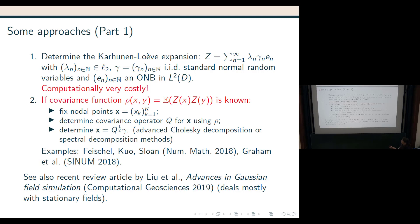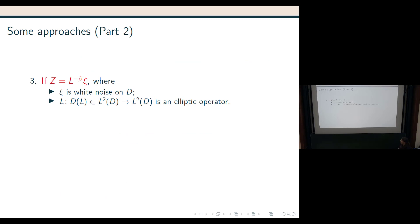And, of course, I wouldn't call this some approaches part one if there weren't a part two, and part two is the approach that we take. So, what we say is, well, what if Z is L to the power minus beta xi, where xi is white noise on D, and L is some elliptic operator on L2.